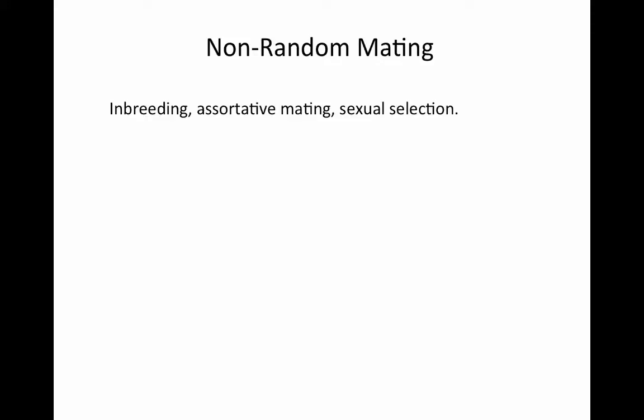We can have inbreeding, so breeding between related individuals is one way that mating can be non-random. We can also have assortative mating. And then sexual selection is a way mating can be non-random, but like other forms of selection, sexual selection is going to tend to decrease genetic variation by selecting for particular traits. So we're not going to talk about sexual selection in this context. We're going to focus our efforts predominantly on inbreeding and assortative mating.